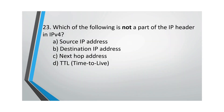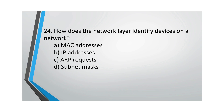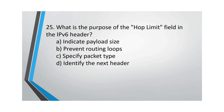Question 23: Which of the following is not a part of the IP header in IPv4? The correct option is C, next hop address. Question 24: How does the network layer identify devices on a network? The correct answer is option D, IP address.